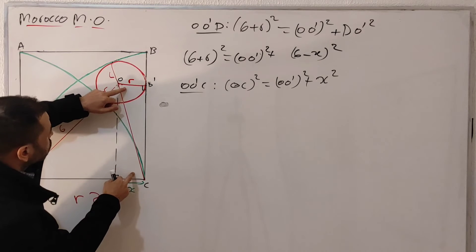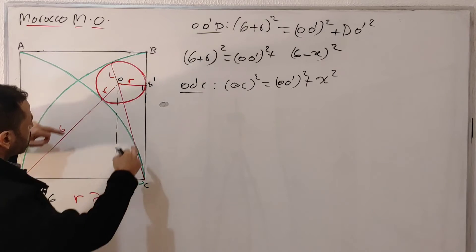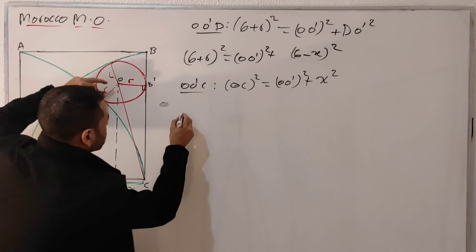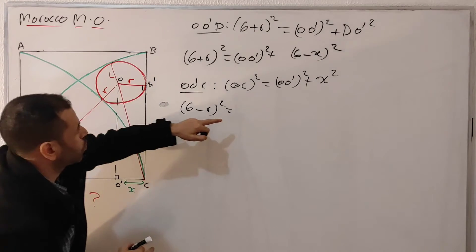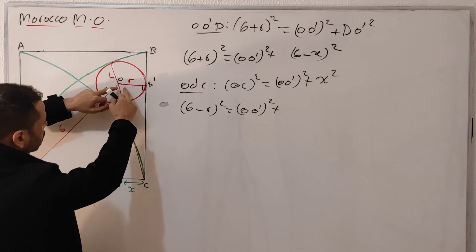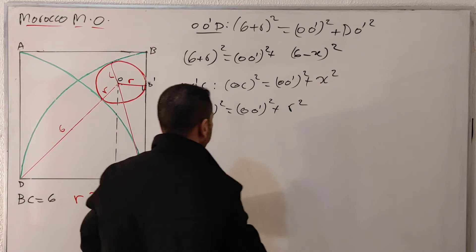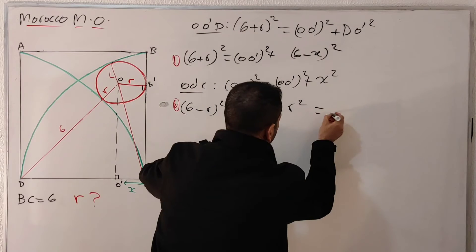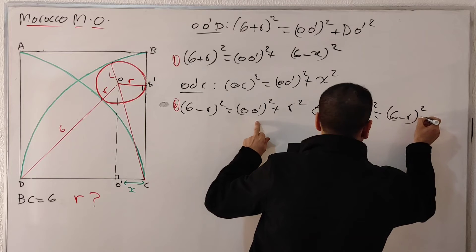Since we have rectangle O-B prime-C-O prime, that means r equals x. So we replace x with r, giving us r² on the right side. Now combining equation one and equation two, we can eliminate O prime². From equation two: O prime² = (6 − r)² − r². Substituting into equation one: (6 + r)² = (6 − r)² − r² + (6 − r)².